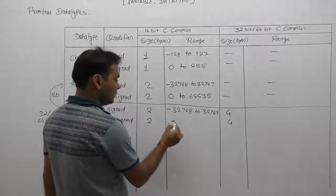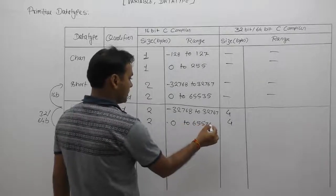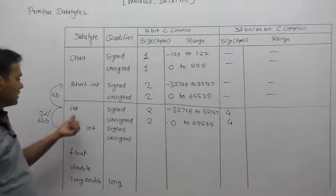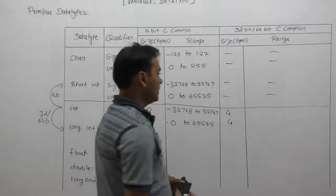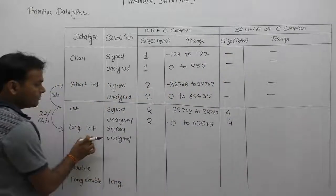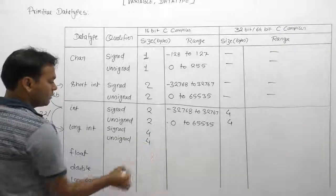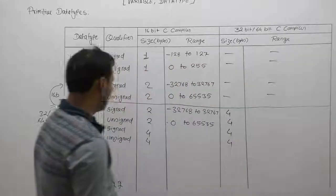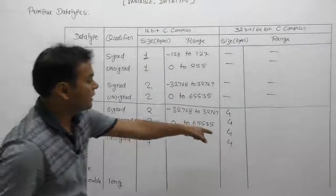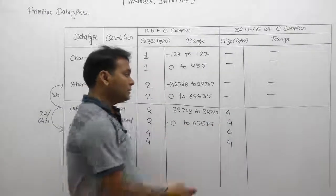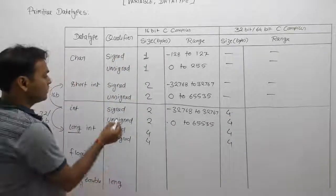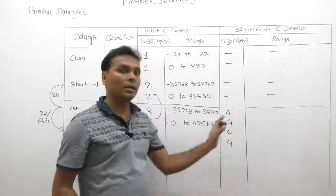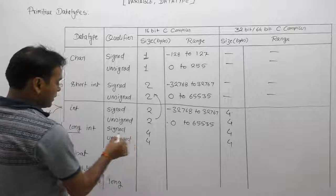In the case of a 32-bit compiler, int is the same as long int. Long int in any kind of compiler takes 4 bytes — for both signed and unsigned — therefore it is also 4 bytes. In a 16-bit compiler, int behaves the same as short int, and in a 32-bit or 64-bit compiler, int behaves the same as long int.